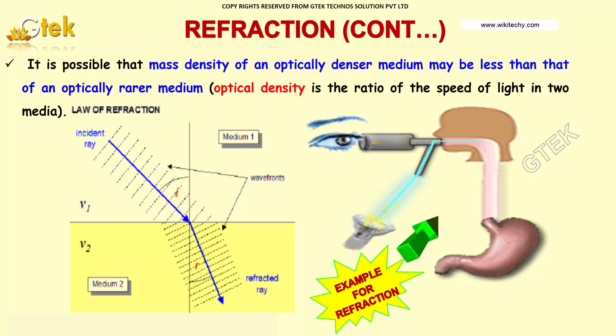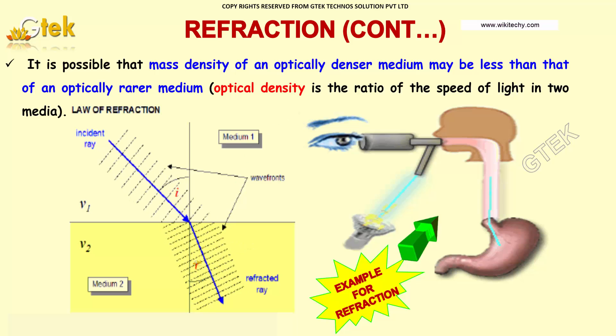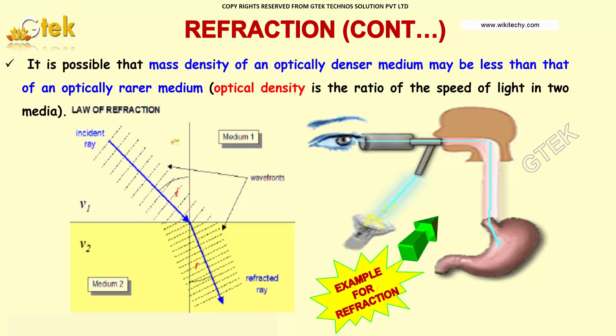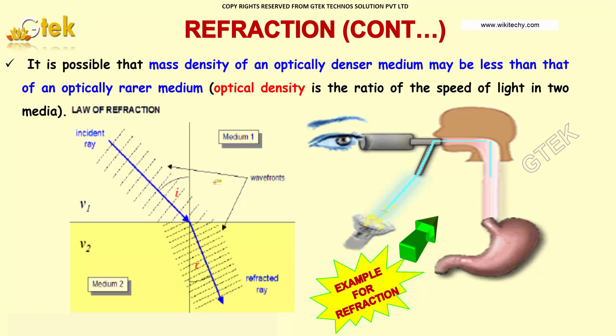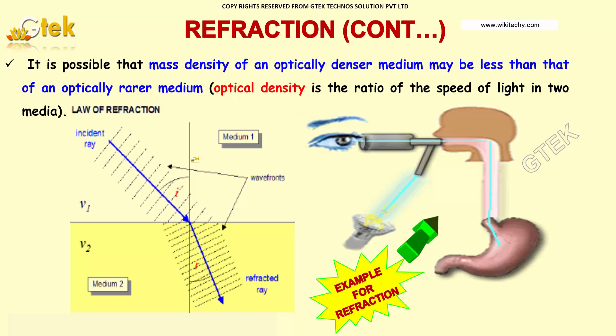It is possible that mass density of an optically denser medium may be less than that of the optically rarer medium. Optical density is the ratio of the speed of light in two media.